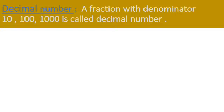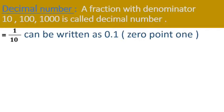Decimal number: a fraction with denominator 10, 100, or 1000 is called a decimal number. Dear children, in a fraction containing numerator and denominator, if the denominator is 10 or 100 or 1000, it is called a decimal number. For example, 1 by 10 - here numerator is 1, denominator is 10, therefore we call this a decimal number. It can be written in decimal as 0.1.